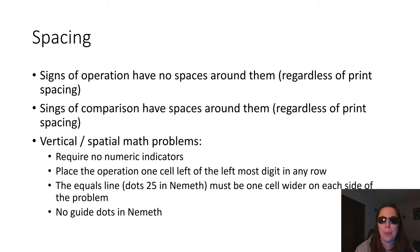Spacing is really important for Nemeth equations. Signs of operation - plus, minus, times, divide - never have spaces around them. Even if there's a space in the print next to the plus sign, do not put a space next to plus signs in braille. Signs of comparison do have spaces around them. Even if the print did not have a space, we always put spaces around equal signs, greater than and less than signs, ratios and proportions. Signs that compare one half of the equation to the other half of the equation. They always get a space around them. And that's really important in Nemeth to make it possible for a tactile reader to efficiently find the balance point of the equation.